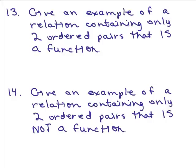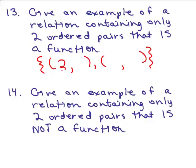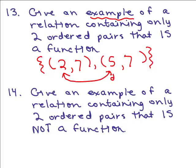Number 13: give an example of a relation containing only two ordered pairs that is a function. We know we're putting in two ordered pairs, and for a function the x coordinates must be different. It doesn't matter what numbers you pick as long as the x coordinates are different — for example, x = 2 and x = 5. The y values can be any numbers, same or different — it doesn't matter.